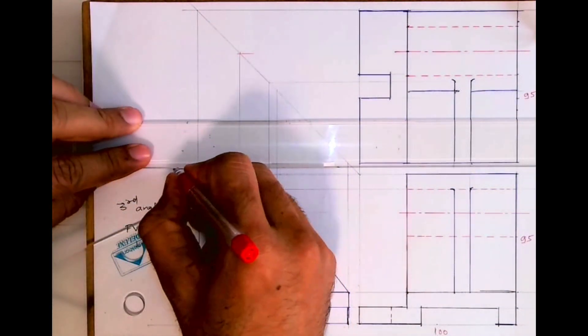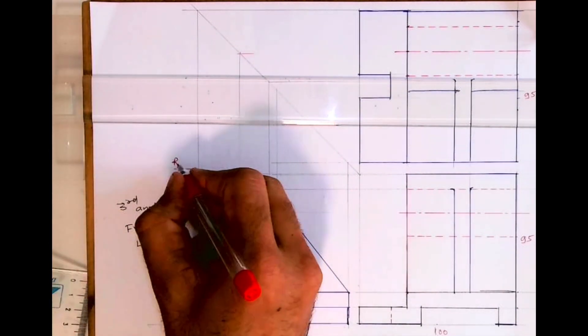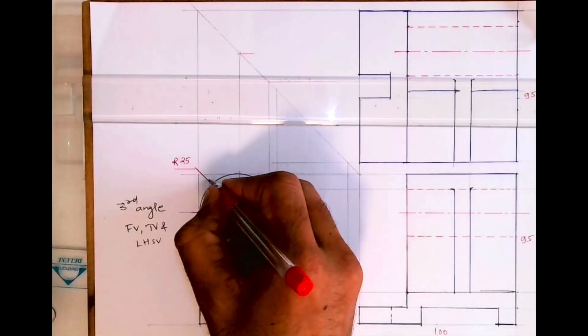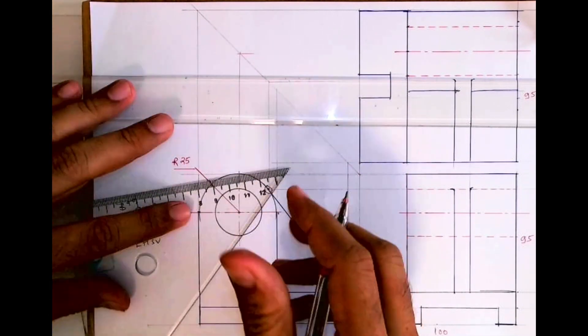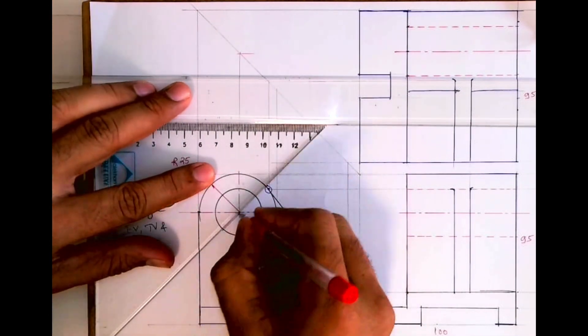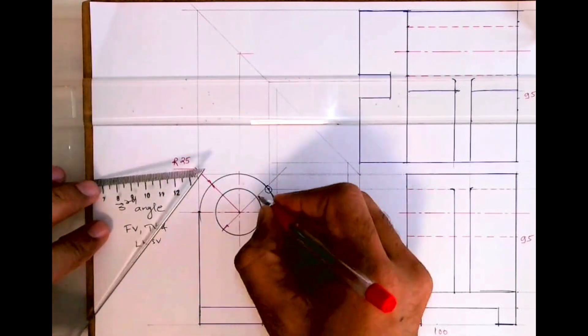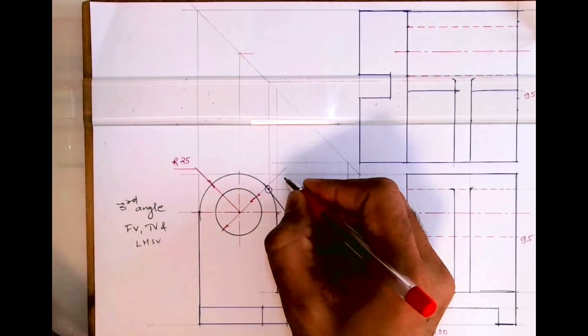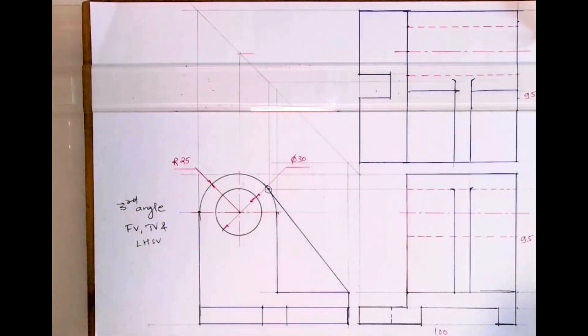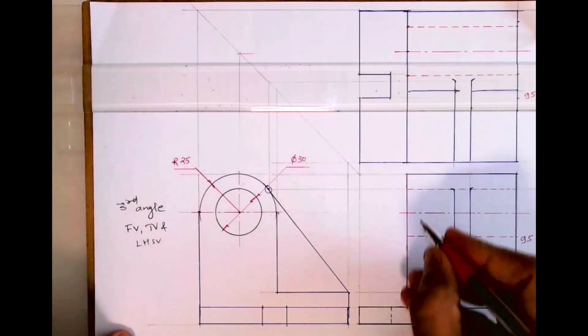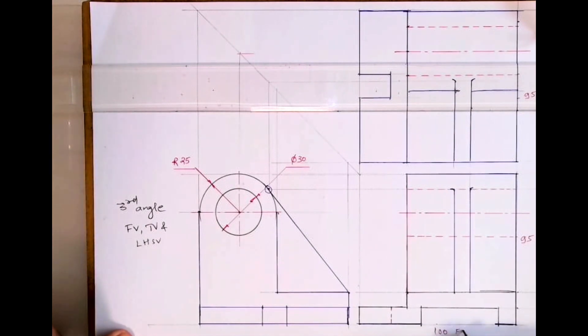Like this, whenever you have a circle, it's radius 25, so we will show it like this. Always remember to do 8 to 9 dimensions in your drawing. And circle always you should do it like this, so that's why I'm showing you. You can write labeling: front view, left hand side view, and top view.